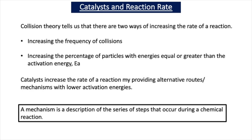Collision theory tells us that there are two ways of increasing the rate of a reaction. You can either increase the frequency of collisions — that's what happens when you increase the concentration of reactants — or you can increase the percentage of particles with energies equal to or greater than the activation energy, which is what happens when you increase the temperature. Catalysts increase the rate of a reaction by providing alternative routes or mechanisms with lower activation energies.